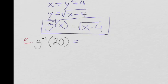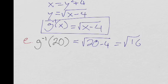When we plug in 20, we get the square root of 20 minus 4, which equals the square root of 16, which is equal to plus or minus 4.